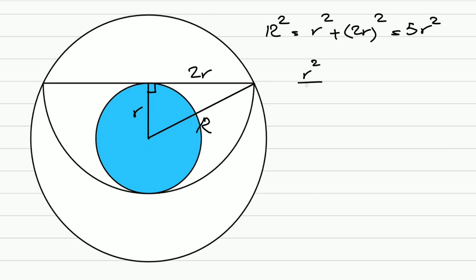So the ratio of R squared to the bigger one squared is 1 to 5, right? Let me add pi to the numerator and denominator here. So this is the ratio of the blue circle to the bigger circle. That's 1 to 5. Simple.